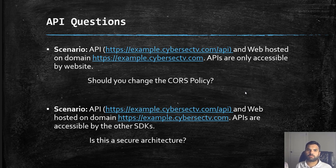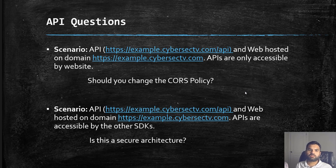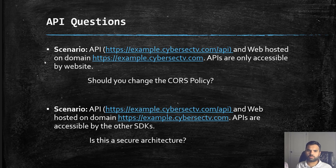The first API question: let's say there is an API hosted on example.cybersecuretv.com/api. The website and the API are front-end and back-end — the API does the CRUD operations and is hosted on a different domain. The website is hosted on example.cybersecuritytv.com, and the APIs are only accessible by the website. Given this scenario, what should be the CORS policy?